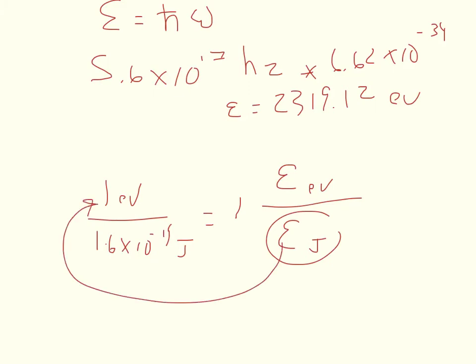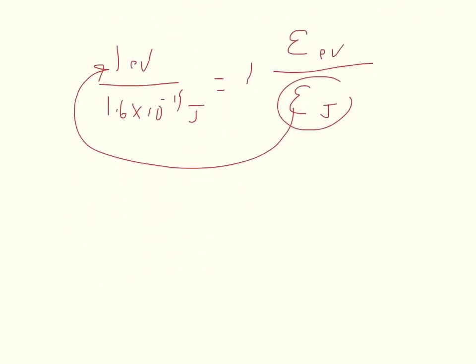So I can just multiply in the energy in joules. In this case, we would take our equation E equals HF, and I'll just plug in HF, or H nu if you would prefer, times 1 electron volt divided by 1.6 times 10 to the negative 19th joules equals my energy in electron volts.